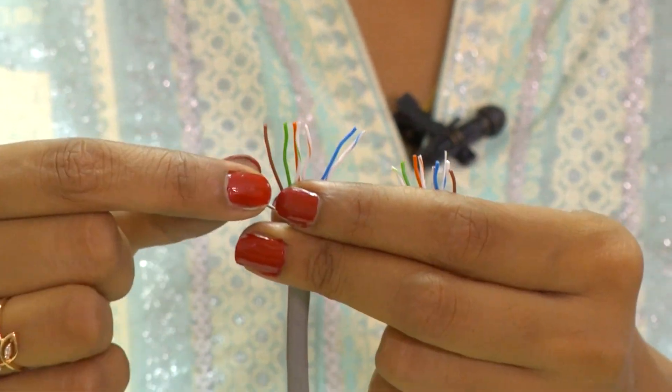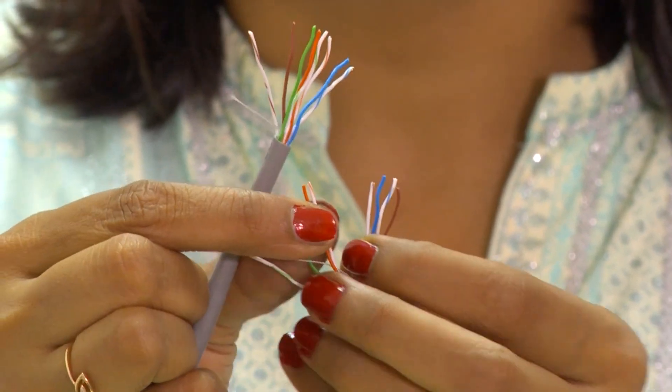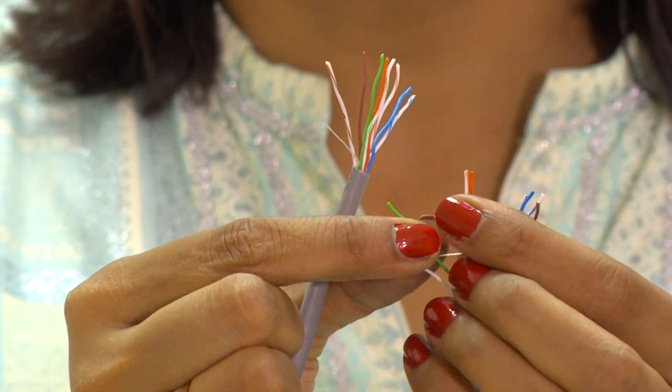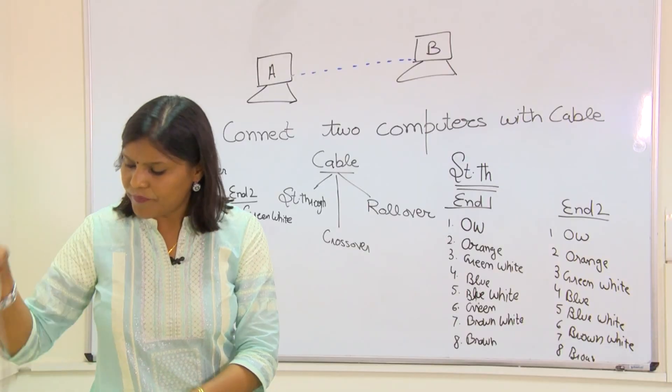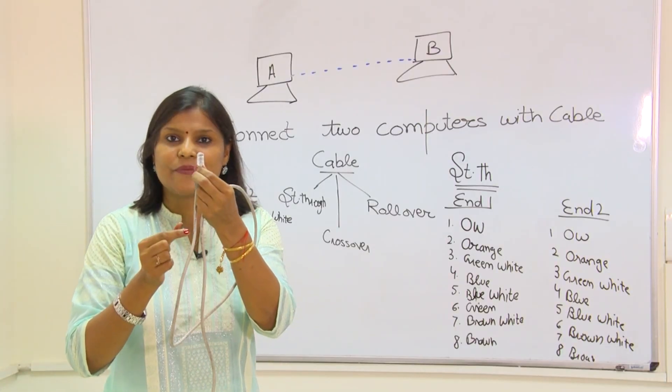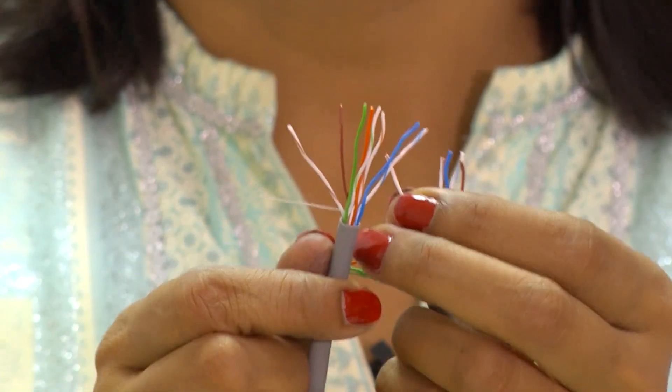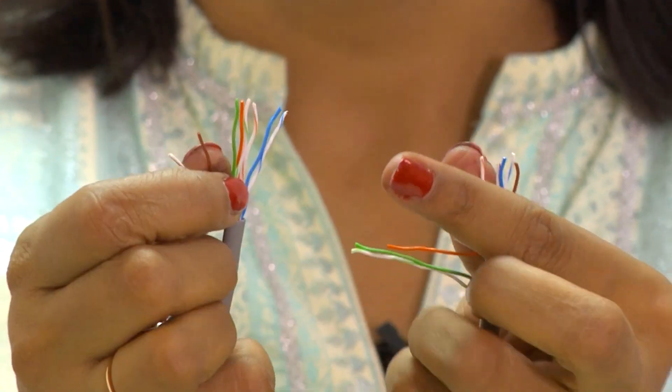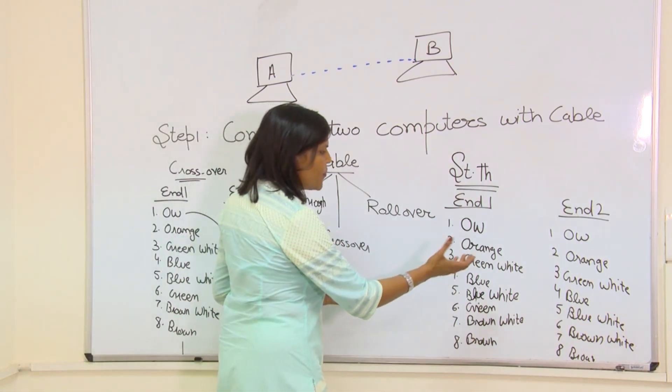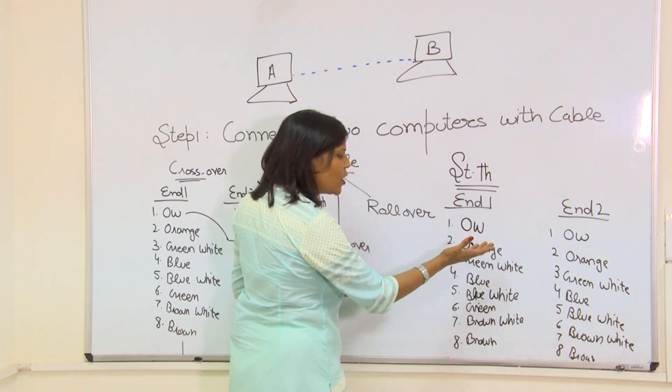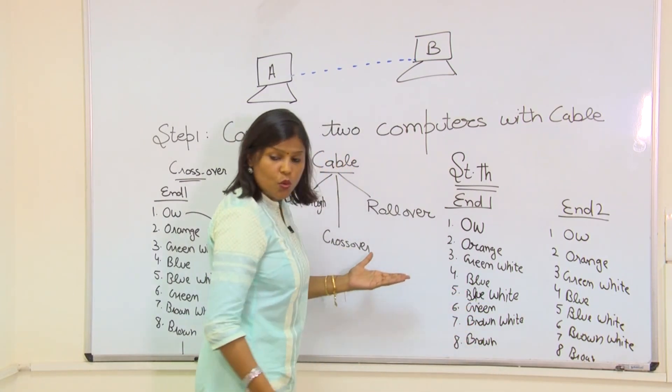If I am keeping, this is a LAN cable, if I am keeping this sequence same on both ends, sequence before inserting in jack, this is called straight through cable. Like I have written this thing also, I have taken one combination: orange white, orange, green white, blue, blue white, green, brown white, brown on one end.